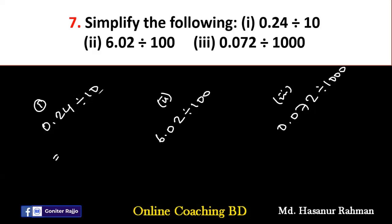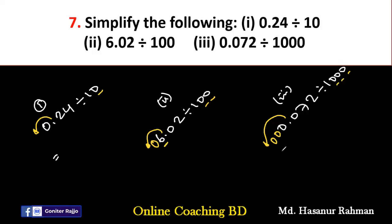Divided by 10 — there is one zero, so we move the point one digit to the left. Divided by 100 — there are two zeros, so we move two digits to the left. But if only one digit is given before the point, we add extra zeros. Divided by 1000 — there are three zeros, so we move three digits to the left, replacing missing positions with zeros.